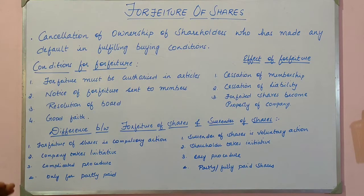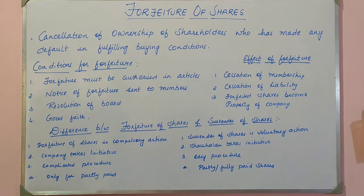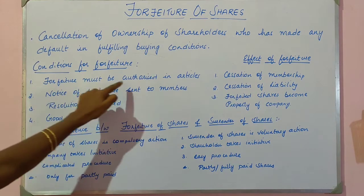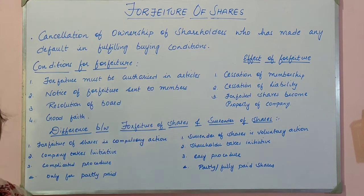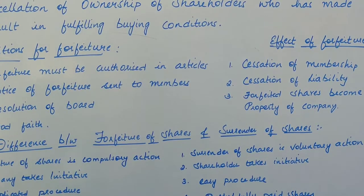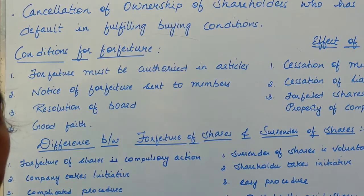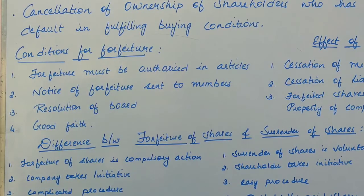Coming to the conditions for forfeiture — if a company wants to go for forfeiture of shares it has to fulfill certain conditions. The first one is forfeiture of shares must be authorized in the articles. That is, the articles of association should clearly state that a company can go for forfeiture if the shareholders will not pay the unpaid amount of calls due.